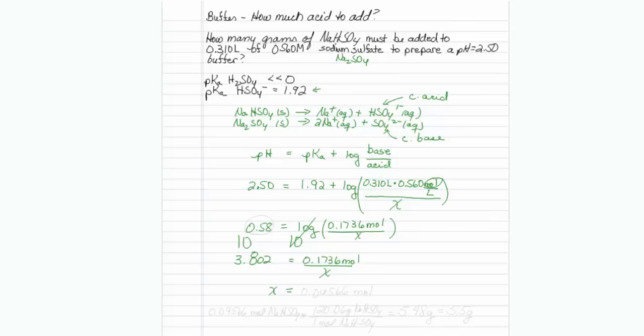My x should be 0.04566, and the units are in moles. So if you put 0.04566 in WebAssign, it's going to mark it wrong, because I'm being asked what? How many grams of sodium hydrogen sulfate must I add?